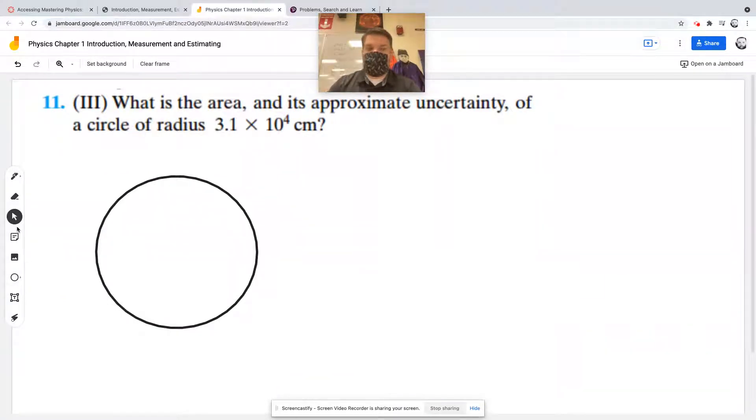And basically, from the center of the circle out to the end is the radius, 3.1 times 10 to the 4th centimeters. The uncertainty will be one order of magnitude to some degree. But we're talking about the area of the circle. What is the formula for the area of a circle? A equals π R squared.